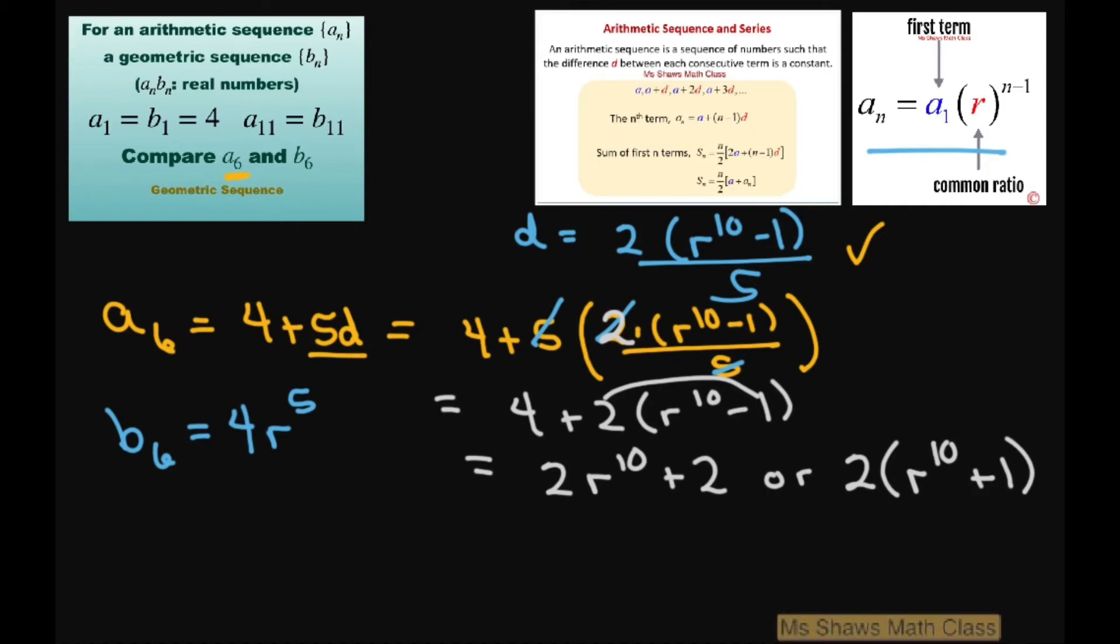So now comparing them, what we're going to do is see which one's bigger. So I'm going to take a_6 minus b_6. Now, if this is positive, that means our arithmetic sequence is bigger. If it's negative, it means our geometric sequence is bigger.